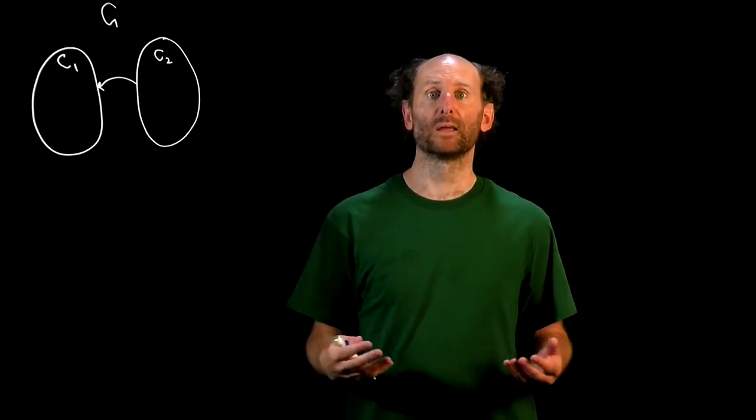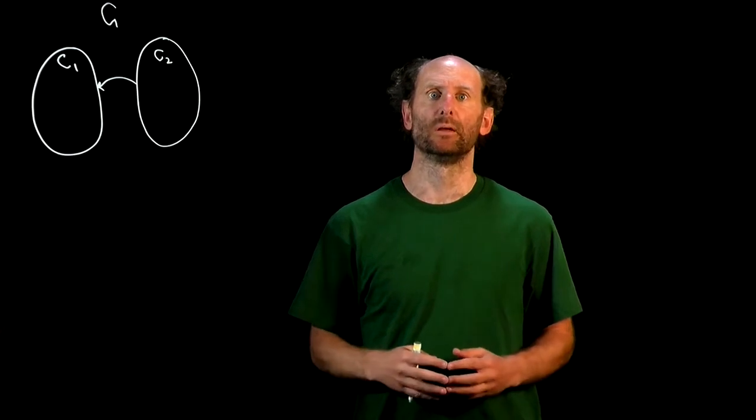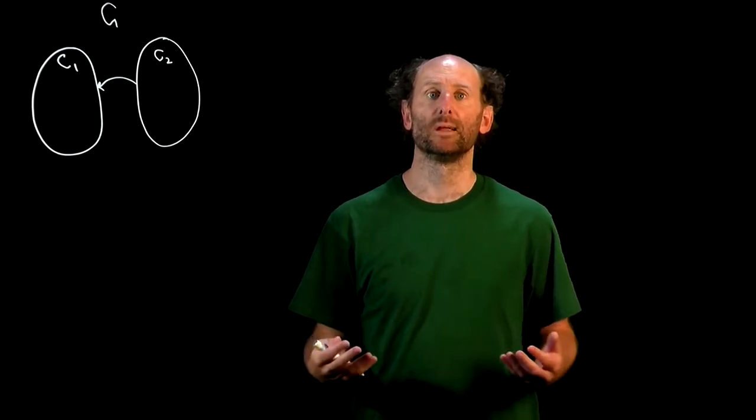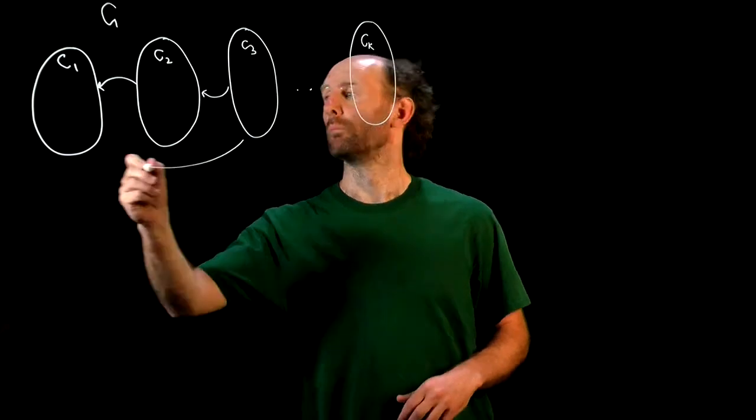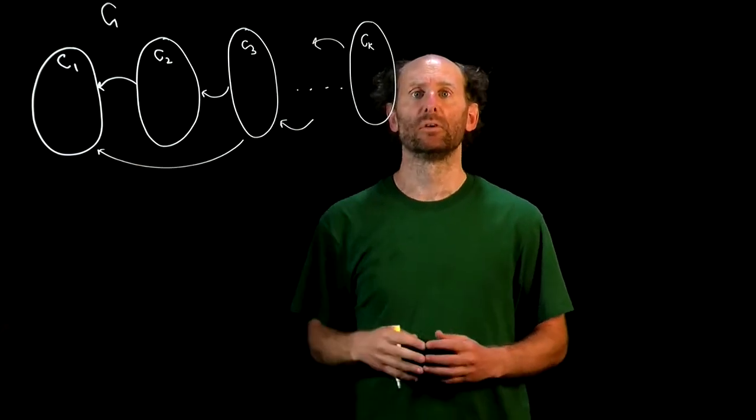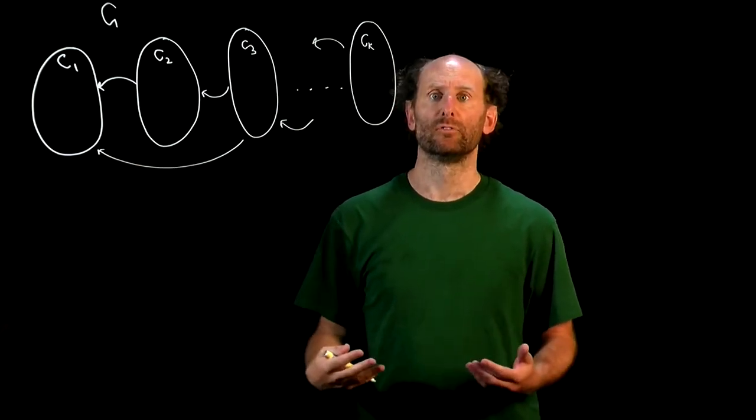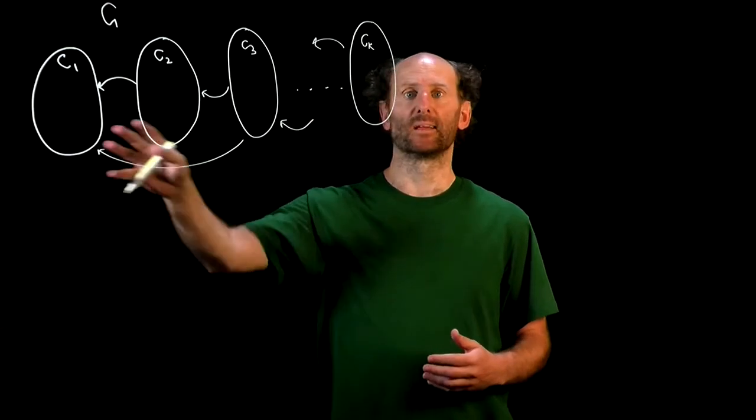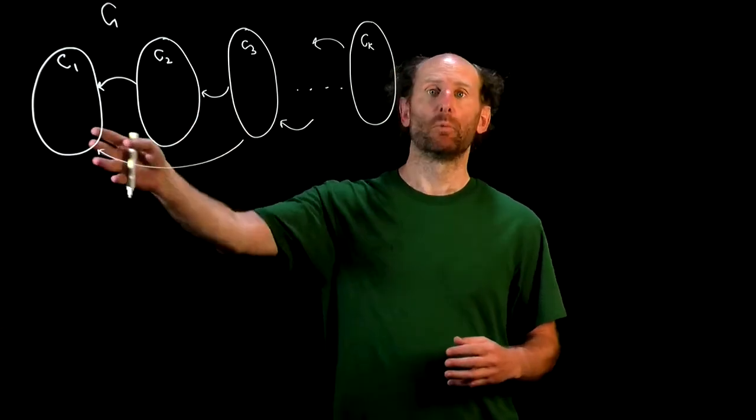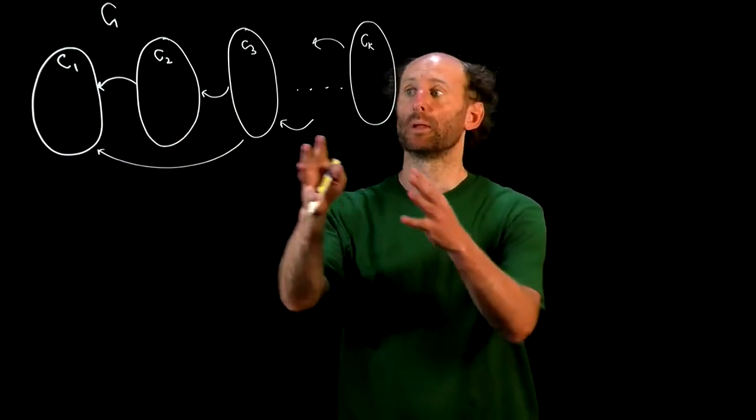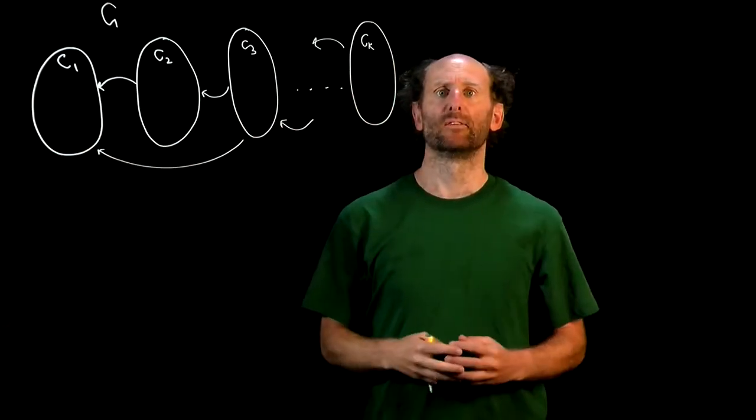So this argument can be made for any strong component of G. So we can draw G like this. This shows each strong component of G and only the arcs that connect them. And there may be more arcs here that we're not showing, but notice that they all point in the same direction.